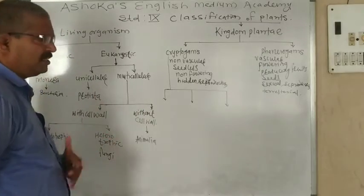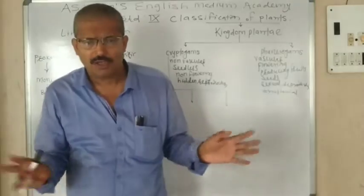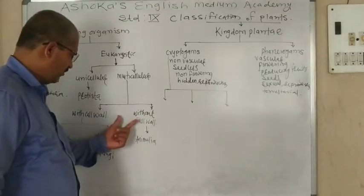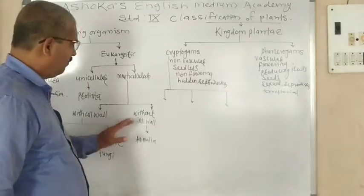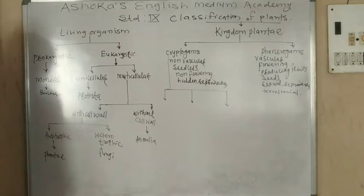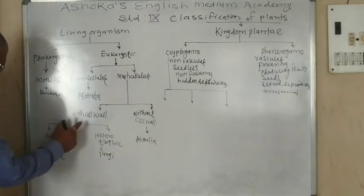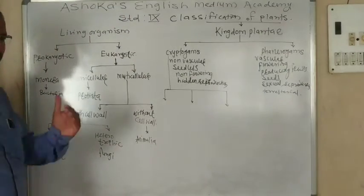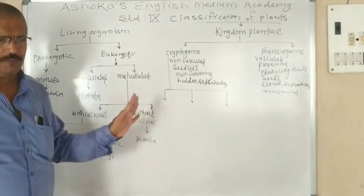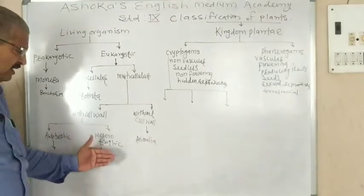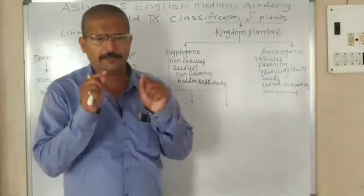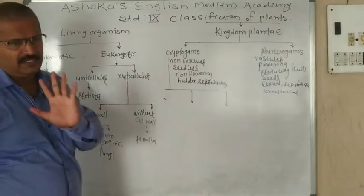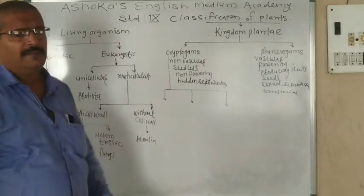The second subdivision is multicellular. Multicellular living organisms are divided into two parts: with cell wall and without cell wall. Under with cell wall, there are autotrophic and heterotrophic groups. Autotrophic means all green plants. Heterotrophic means those who depend on other living organisms for their food — the example is fungi.